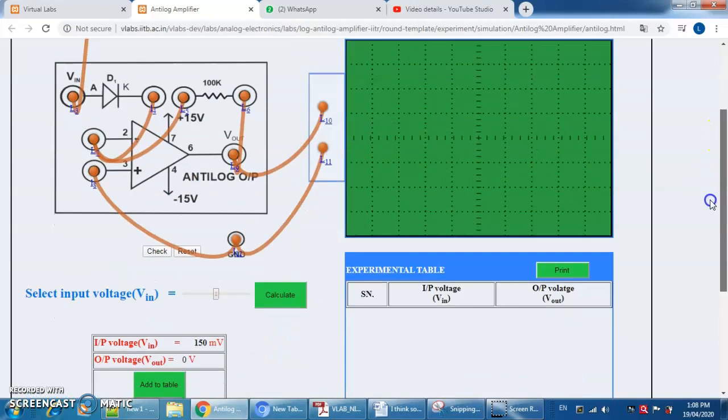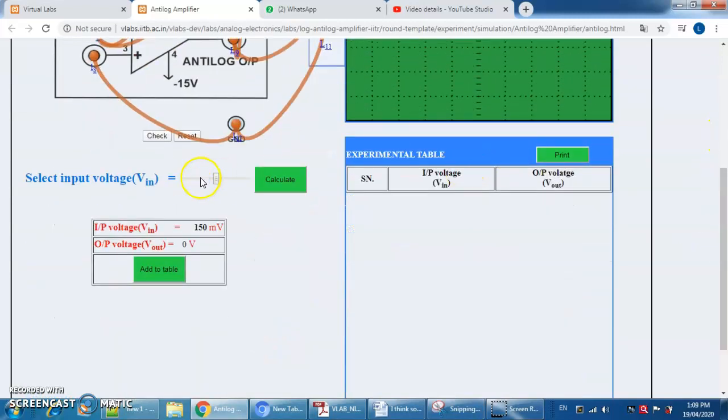First we need to go to 50 millivolts. First reading we can take at 50 millivolts. This is the key. We can calculate and add one row to the table.